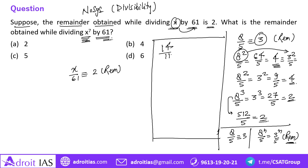Let's take one more example. 14 divided by 11 gives remainder 3. Then 14² = 196, and 196 divided by 11 gives 3² = 9 as a remainder. The property holds here as well.